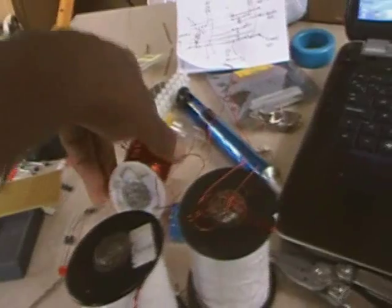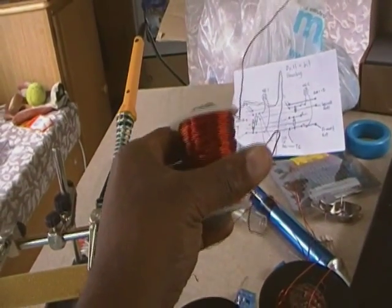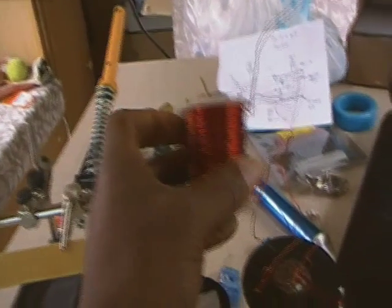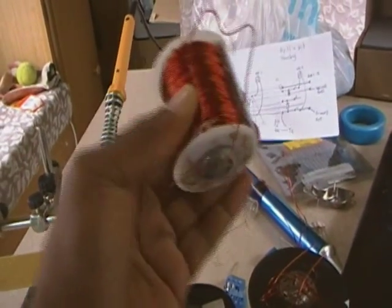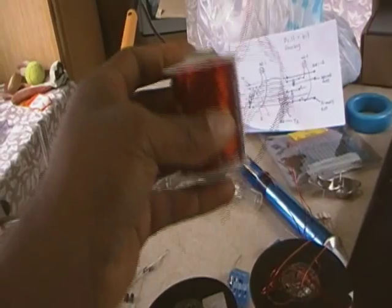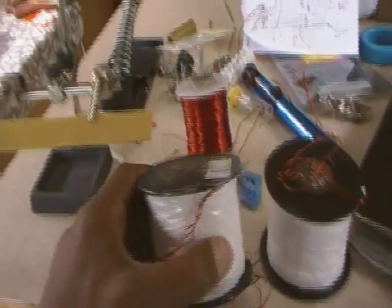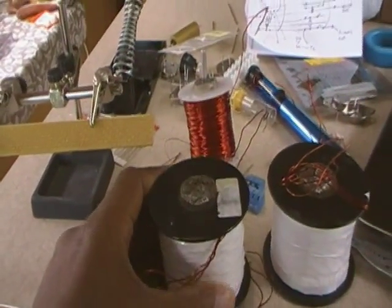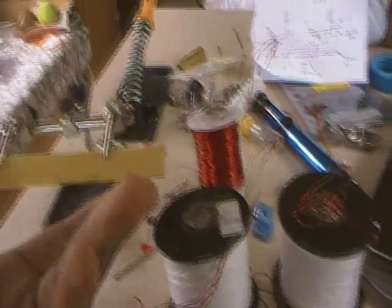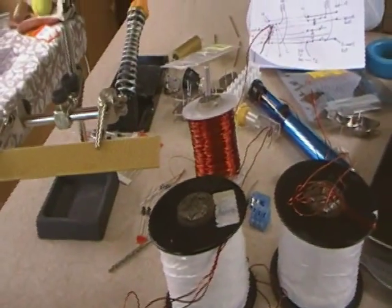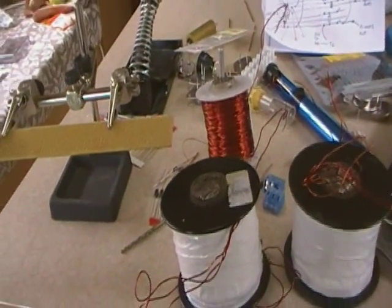I'm also reusing the coil that I wound for my earlier prototypes, just to save me the effort really. So this is bi-filar, these two are tri-filar. So essentially we've got 8 circuits or 7 power circuits and one trigger coil.